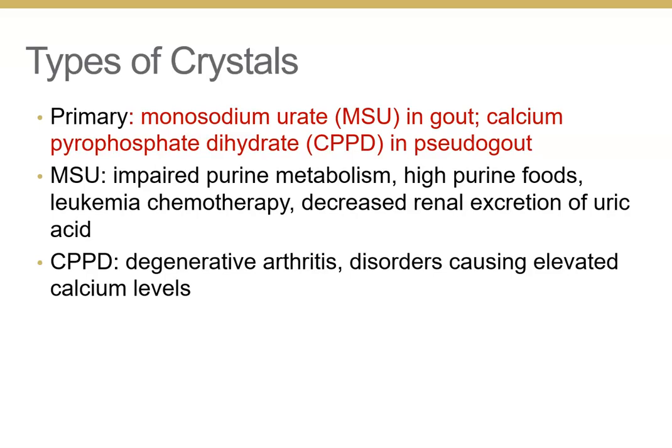In gout you'll see monosodium urate (MSU) crystals; in pseudogout you'll see calcium pyrophosphate dihydrate (CPPD) crystals. These crystals do not look the same in joint fluid as they do in urine, so don't look for the classic rhomboid shapes. Gout results from elevated uric acid — the kidneys aren't clearing it, or the patient eats high-purine foods like shellfish and pork.